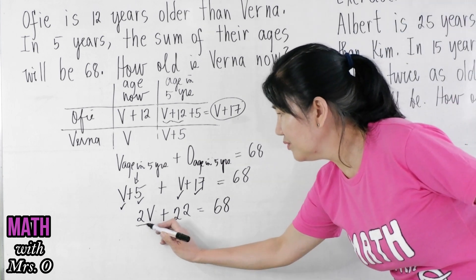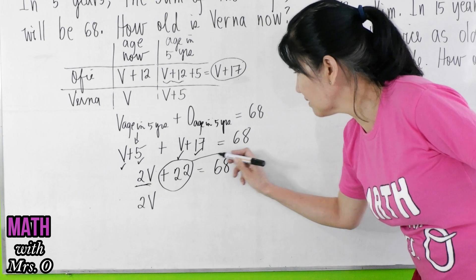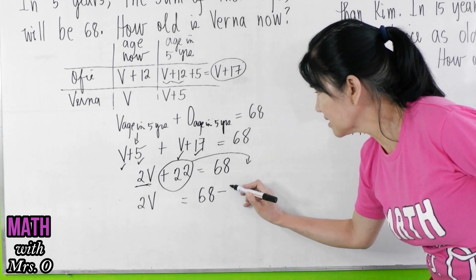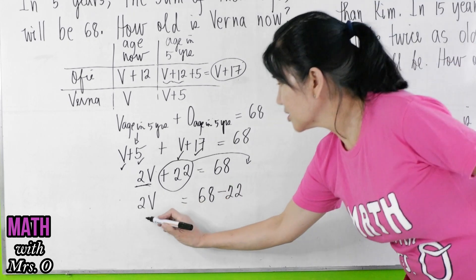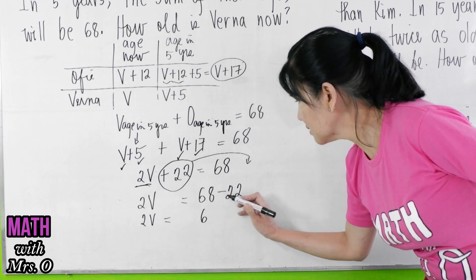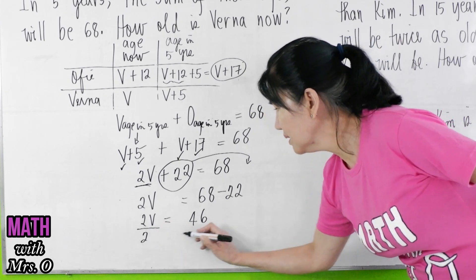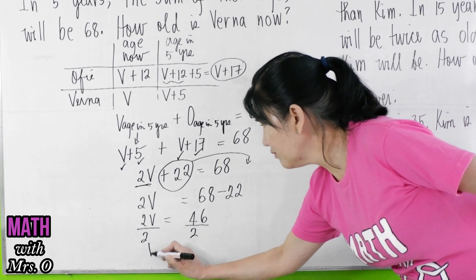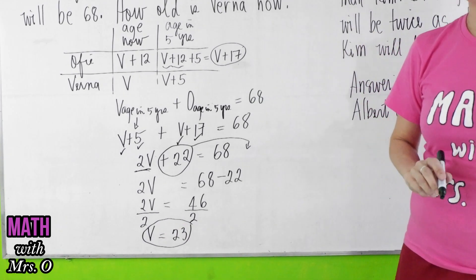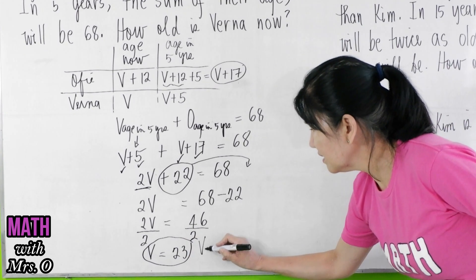Now isolate 2V on one side by transposing. So you have 68 minus 22, which gives you 46. Divide both sides by 2. You get V is equal to 23. So the correct answer is 23. How old is Verna now? Verna is 23 years old.